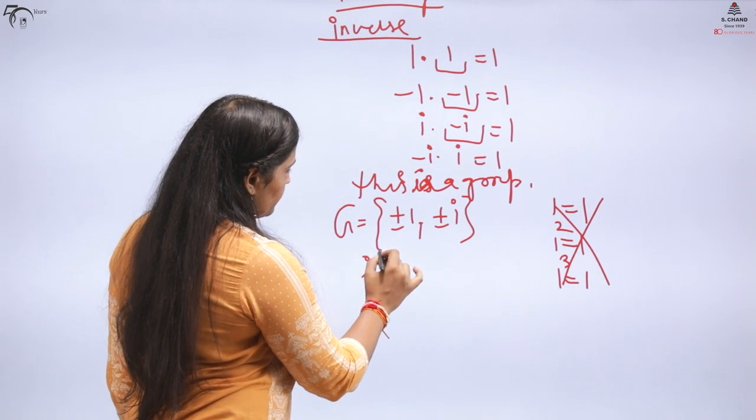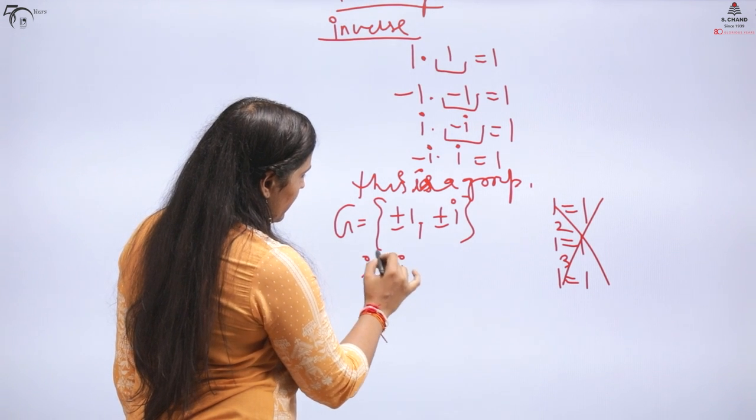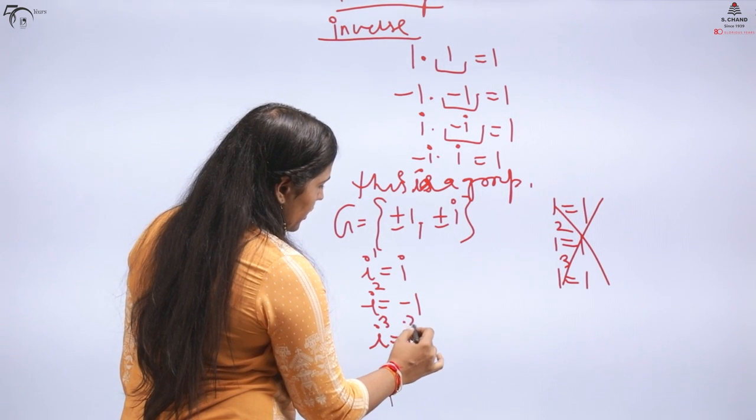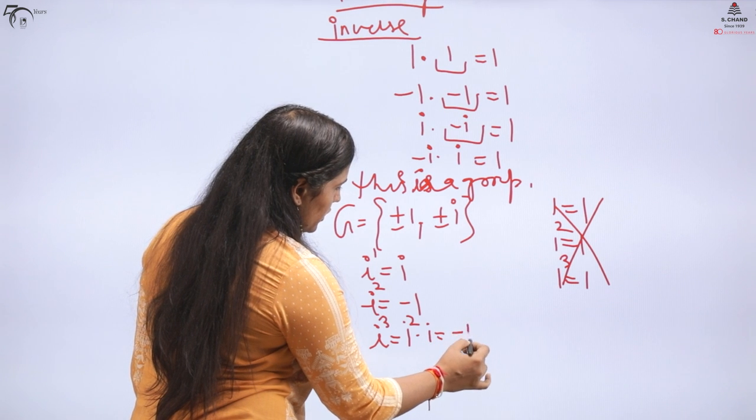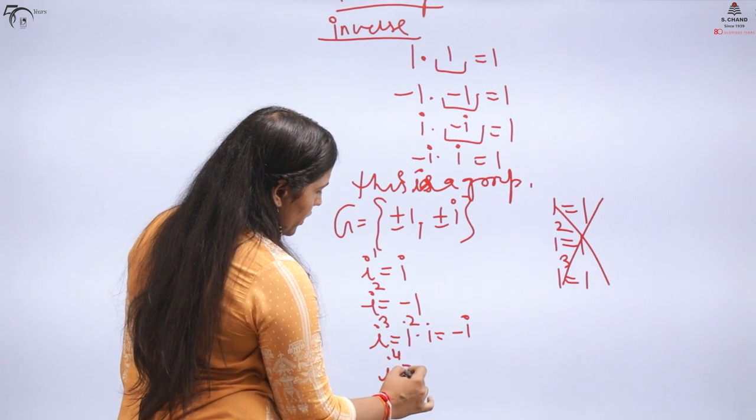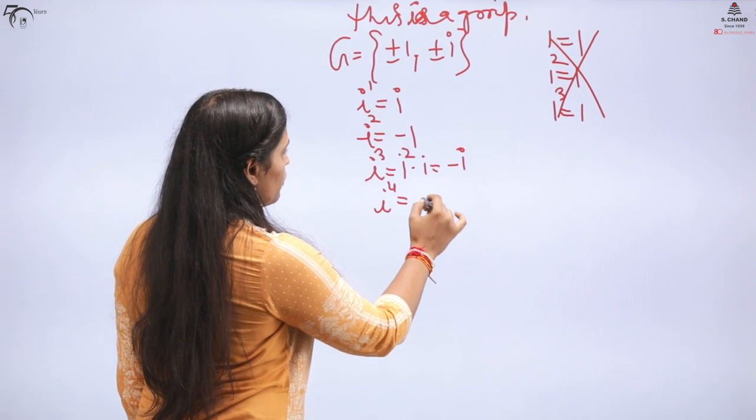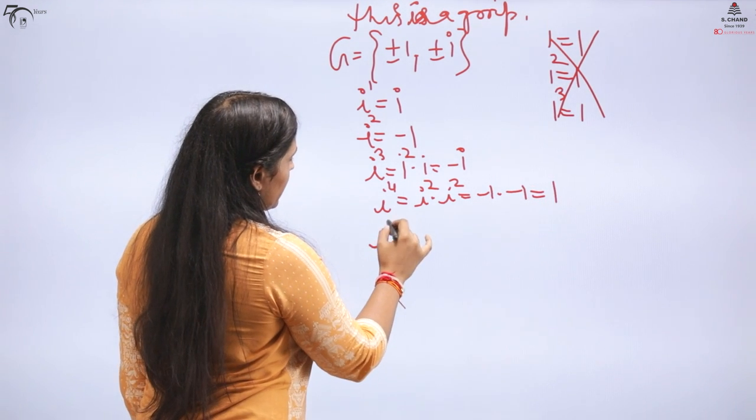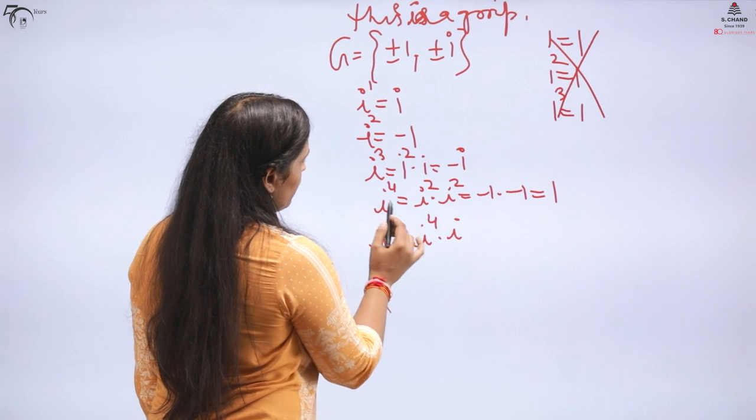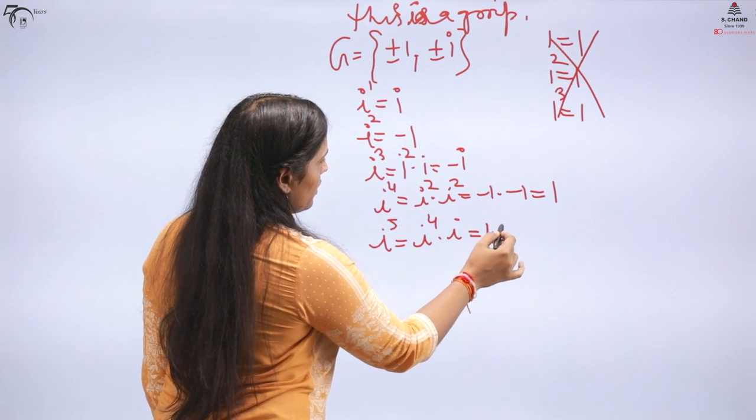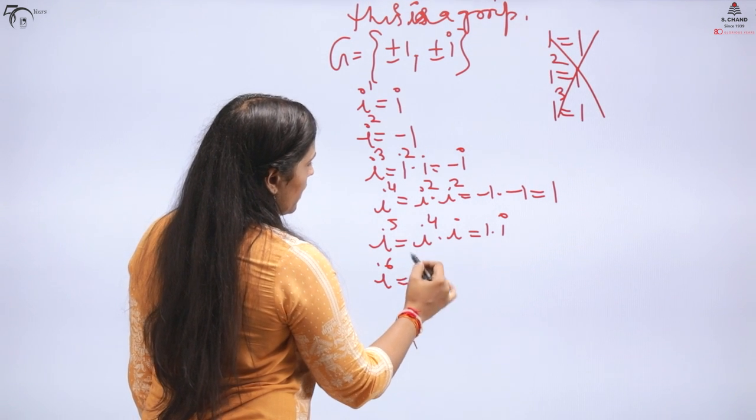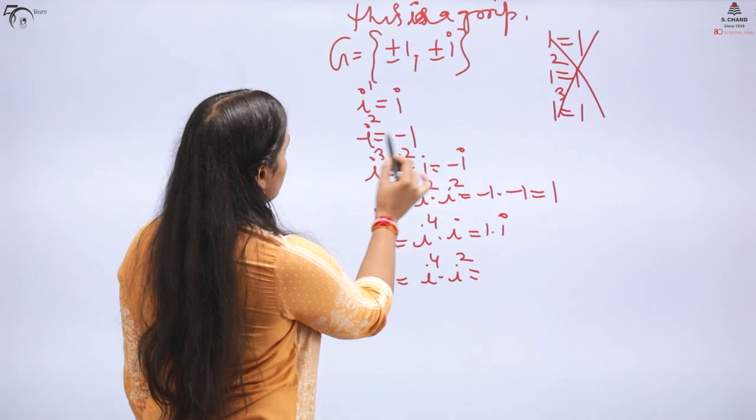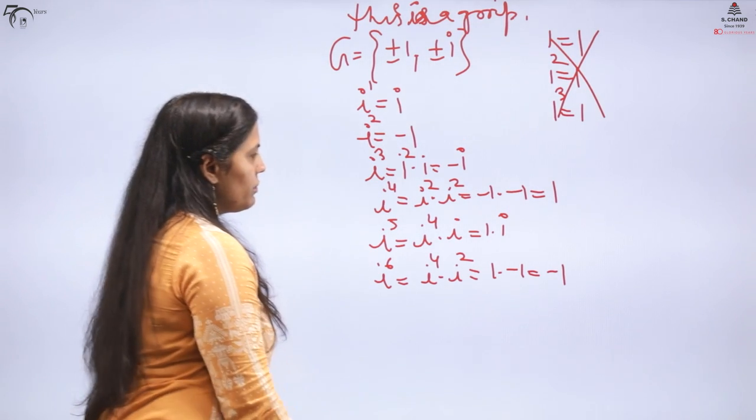Coming to the point of how this is cyclic. You have to figure out: there are 4 elements - 1, -1, iota, -iota. If I start from 1 and there is multiplication, when you multiply 1, you will only get 1. So 1 is not generating all elements, it is not a generator. The same way -1 is not a generator. Let's start from iota.